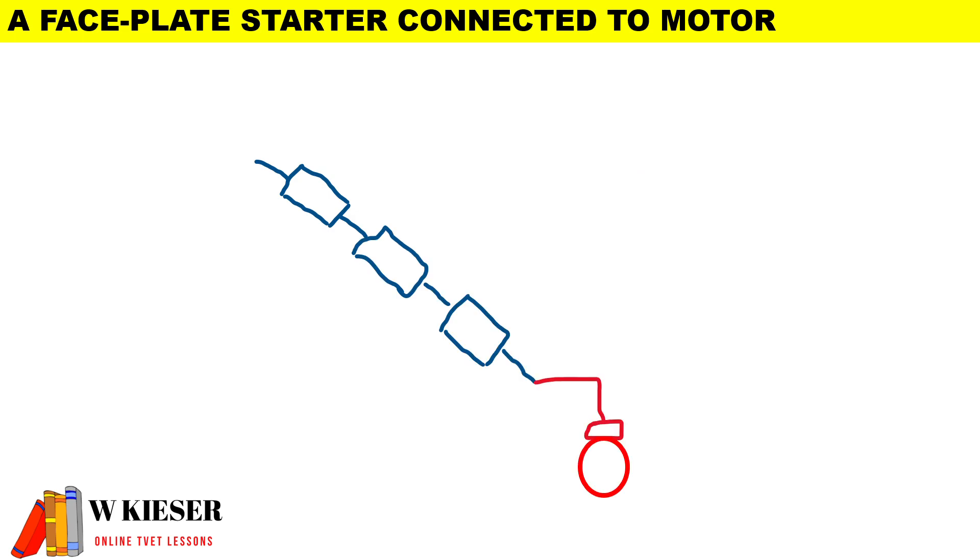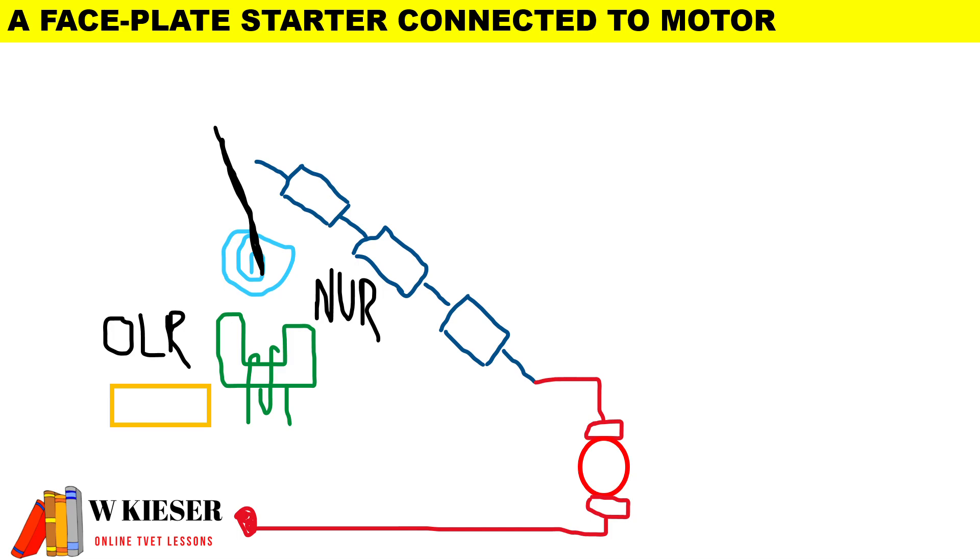For our faceplate starter, we put resistors in series with the armature to limit current at start. We have a position arm which moves from the off position to stud one during start, and we have two protective devices: the overload relay and the no-volt relay.